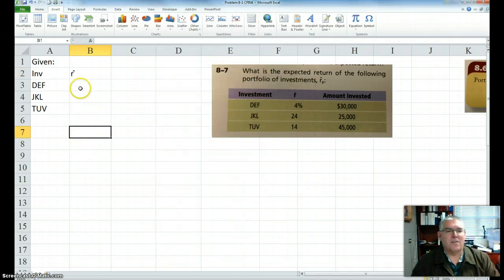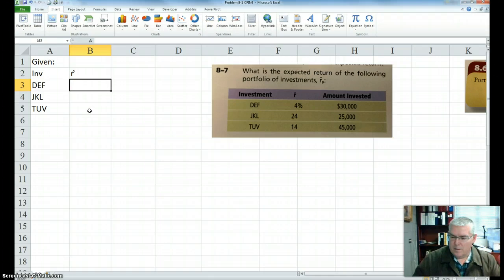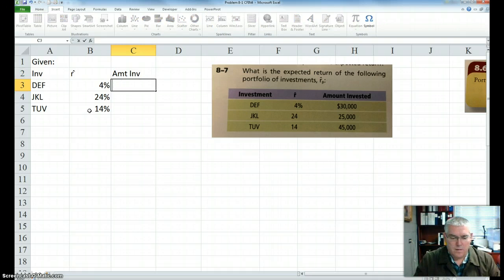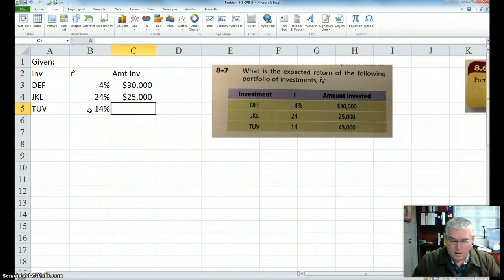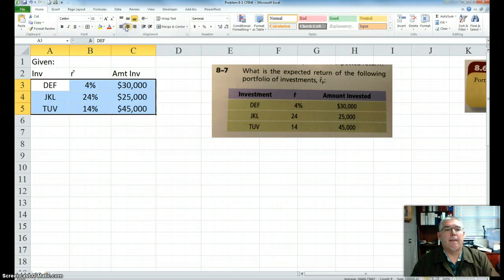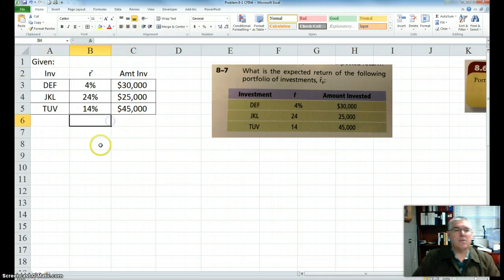And it puts an approximation of that anyway. And then finally we have 4%, 24%, and 14%, and the amount invested is $30,000, and $25,000, and $45,000. Okay, so that's what we're given.